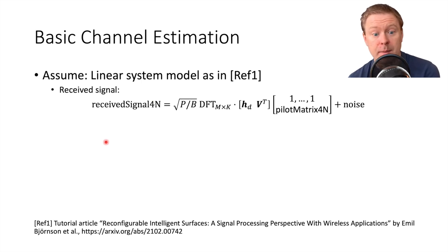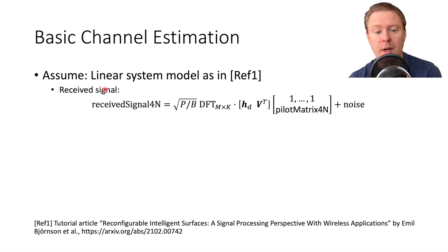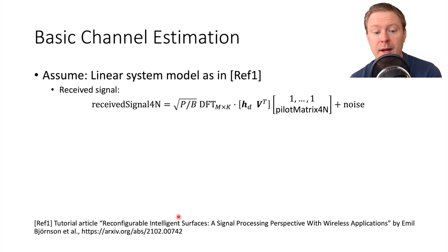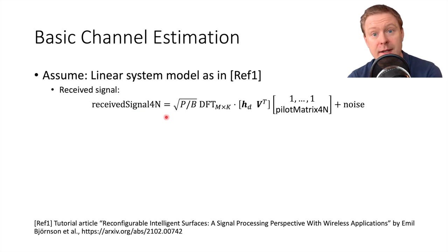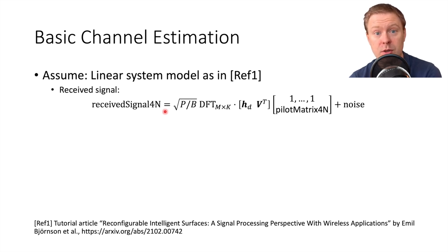For the channel estimation setup, we need to set a model for the system. The starting point is to assume a linear system model, as provided by a reference in the challenge description. In dataset one, we receive signals over all subcarriers in this OFDM system when using 4 times N — where N is the number of elements — different configurations. We transmit the same pilot over and over again and test what the received signal will be.